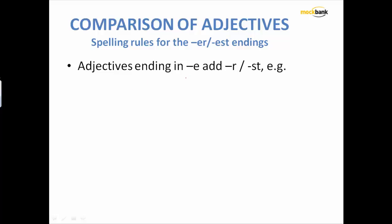For comparative, what do we use? We add er. And for superlative, we add est. And if your word already has got 'e', you should not be adding another 'e'. You will simply be adding r and you will simply be adding st for comparative and superlative degrees.